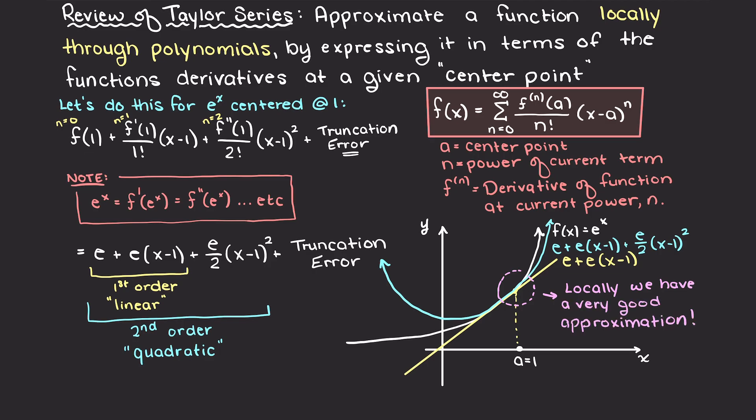However, when we deviate too far from our center point, our approximation becomes worse and worse. This is because we are truncating, or cutting off, additional fitting terms in our Taylor series expansion. With each additional term, our approximation gets better and better as we have less error, but we'll come back to this concept shortly.